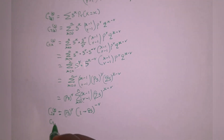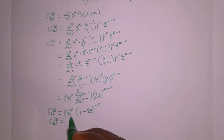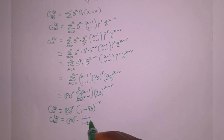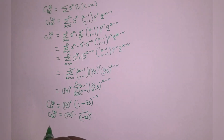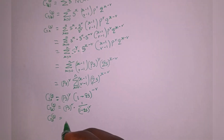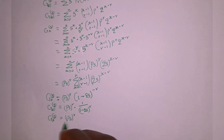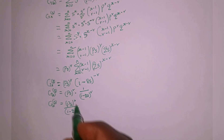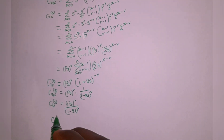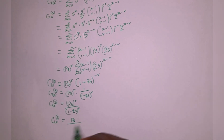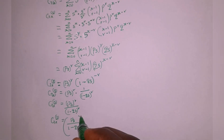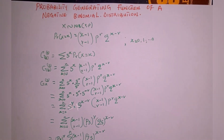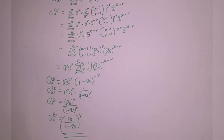So G sub X of s equals ps raised to the power of r, and we know this can also be written as one over one minus q·s, raised to the power of r. Therefore G sub X of s equals ps raised to the power of r over one minus q·s raised to the power of r. Since the powers are the same, this simplifies to: the probability generating function equals p·s over one minus q·s, all raised to the power of r. Thank you for watching — please subscribe to our channel and follow us for more videos like this.